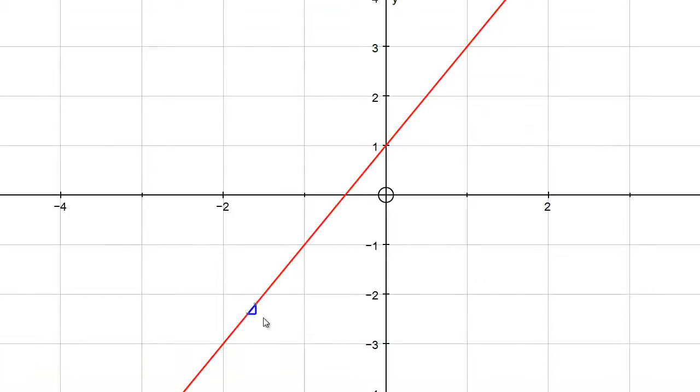For a straight line, we've defined the gradient of the line to be the change in y divided by the change in x. That makes sense for a straight line because the change in y divided by the change in x is constant.